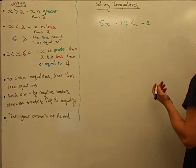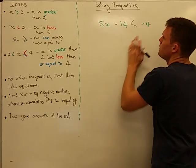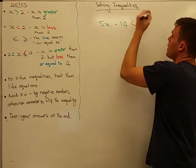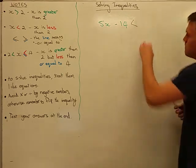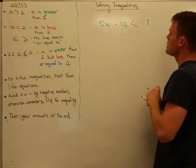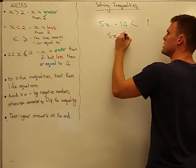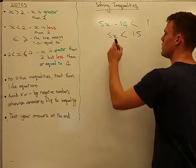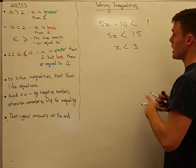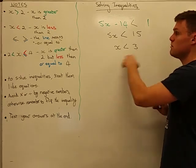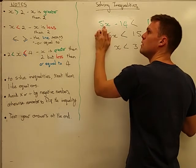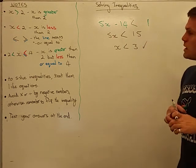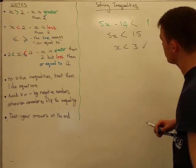If I want to solve this inequality, exactly the same way as I would a normal equation, I add 14 to both sides. I end up with 5x is less than 15, and dividing both sides by 5, I end up with x is less than 3. Now we check ourselves — pick a number that's less than 3, I always pick 0. So 0 times 5 minus 14 gives negative 14, and negative 14 is less than 1. Yes, that's true, so everyone less than 3 will solve this inequality for x.